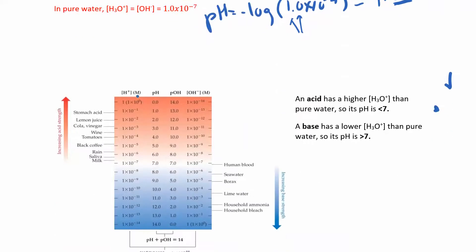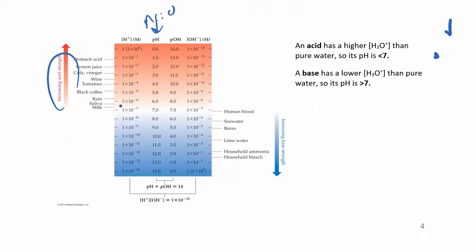Now the pH scale: low pHs are acidic. On the top of the scale, you have things that are acidic, increasing in acid strength. On the bottom, you have things that are basic. Things that are acidic include stomach acid, lemon juice, Coca-Cola, and vinegar. Things that are basic include bleach and ammonia. Borax is on there too — so if you make slime, that's a little bit basic; it's actually a laundry booster. Acids are anything less than seven; bases have a pH greater than seven.